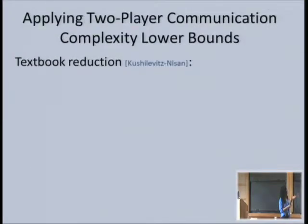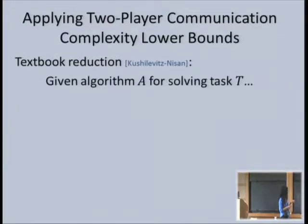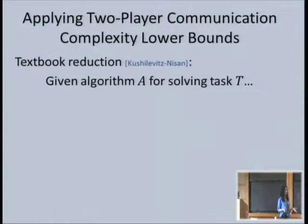Here is how you do a textbook reduction from a two-player communication complexity lower bound to a distributed lower bound. Suppose we have an algorithm A, which is a distributed algorithm, solving some distributed task T. We want to show that it has to run for a long time in order to solve this task.